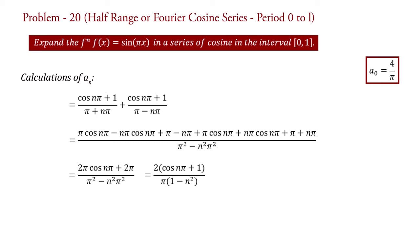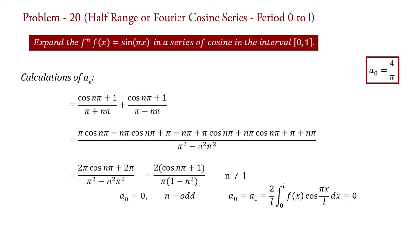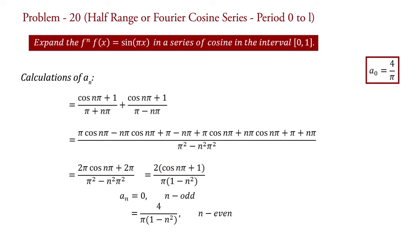If n is odd, then cos(nπ) equals minus 1, so cos(nπ) plus 1 equals 0, and therefore aN equals 0 for n odd. Note that n equals 1 would make the denominator zero, but calculating a1 directly from the original formula also gives 0, so we write aN equals 0 for all odd n. If n is even, then cos(nπ) equals 1, so cos(nπ) plus 1 equals 2, and therefore aN equals 4 upon π(1 − n²) for n even. This is the value of coefficient aN.